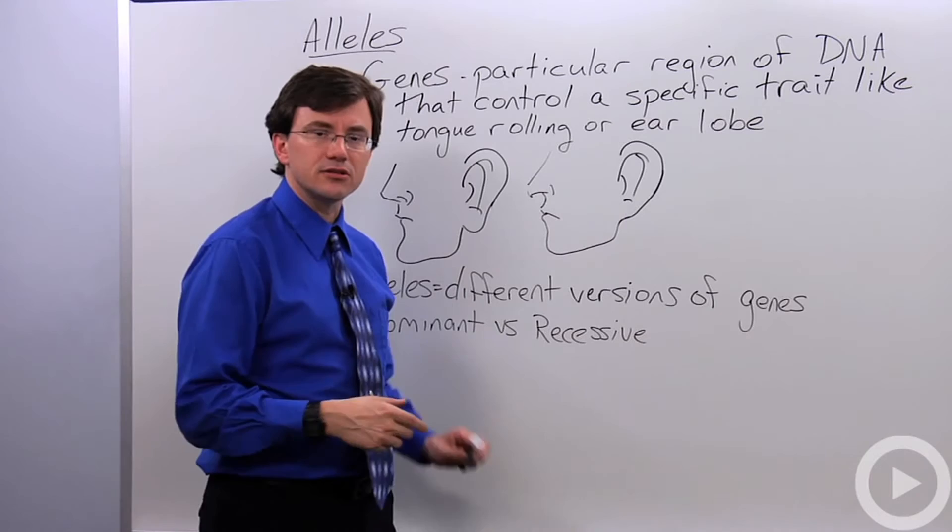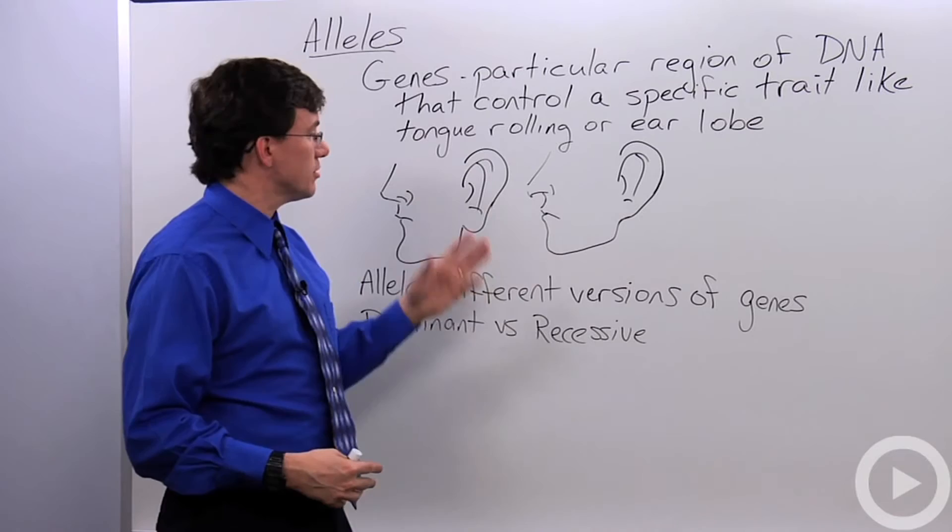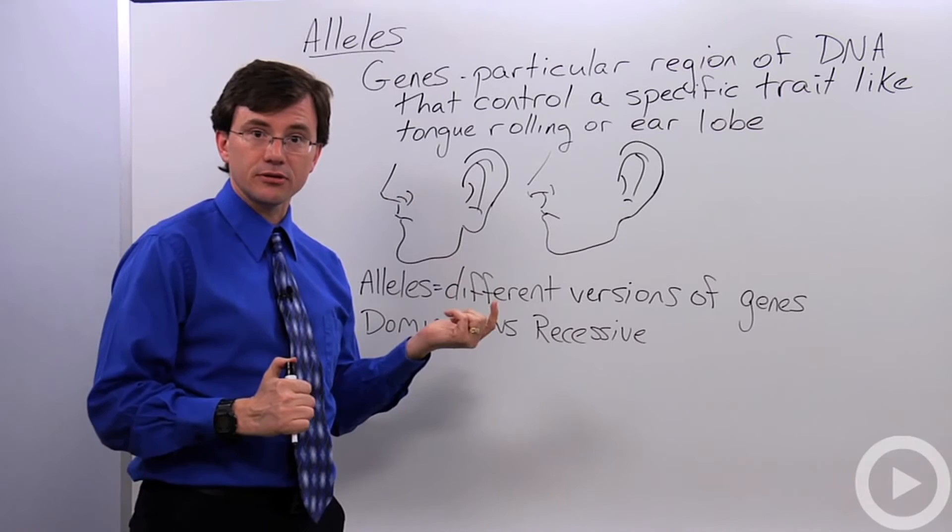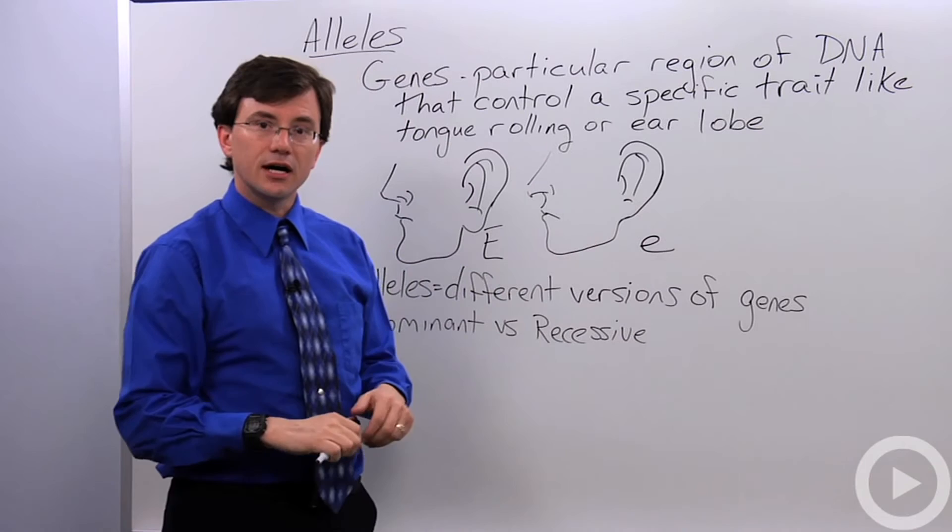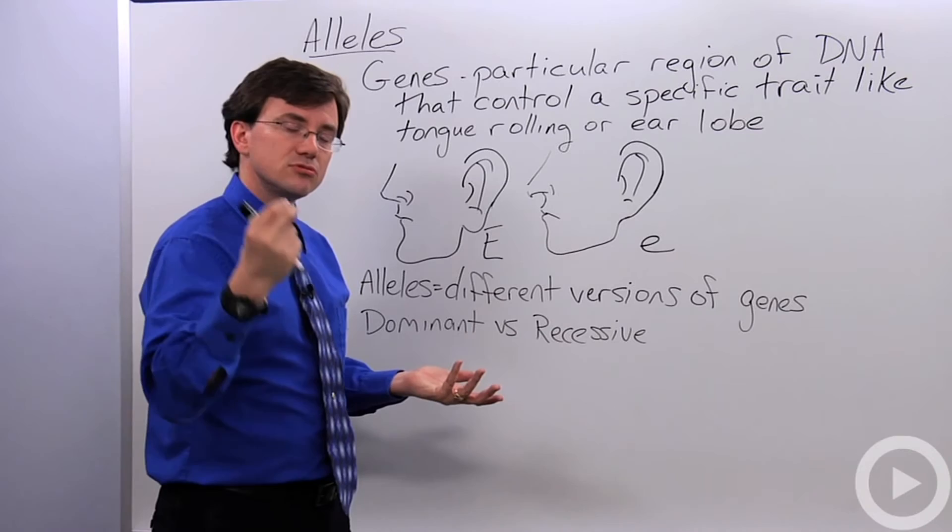Now when you're naming alleles, what you do is you pick a letter that represents the gene. Say, for example, if we're talking about earlobes, I'll use the letter E. Then you use the capital letter of that letter for the dominant. So I'll call this the big E allele and then I'll use this little e allele for the attached earlobe.